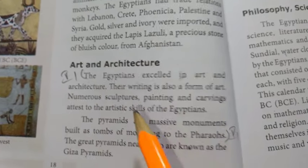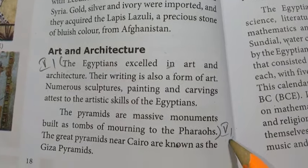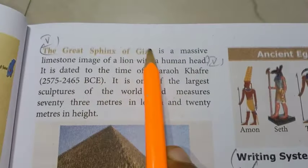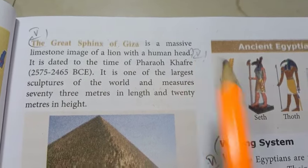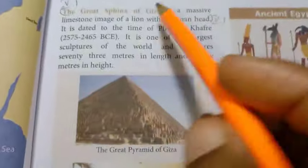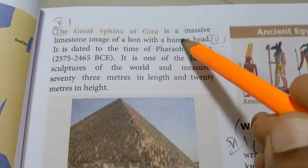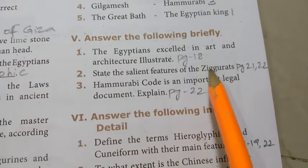The answer for question one covers the paragraph on art and architecture, then the Great Sphinx of Giza (two lines), and the pyramids (two lines). Second question: state the salient features of the ziggurats. Refer to page numbers 21 and 22.